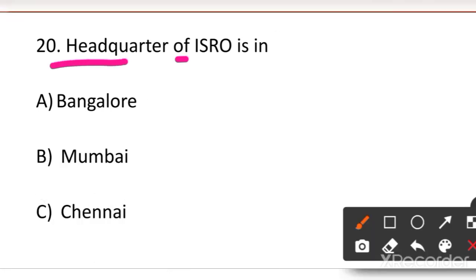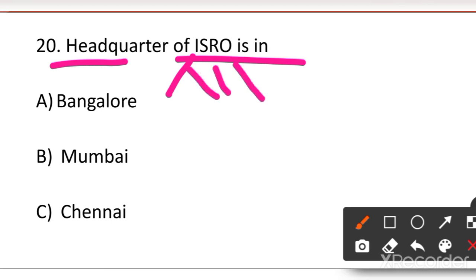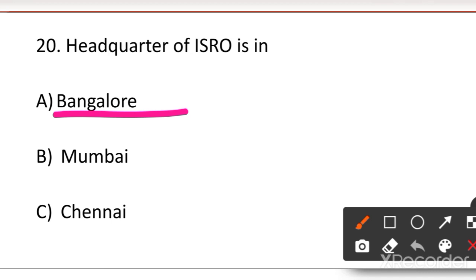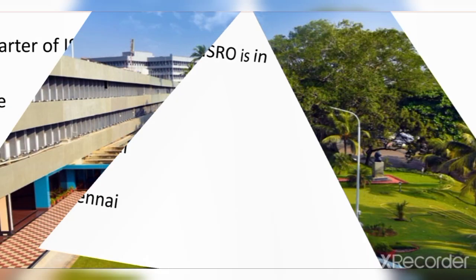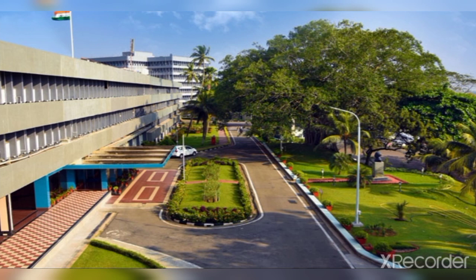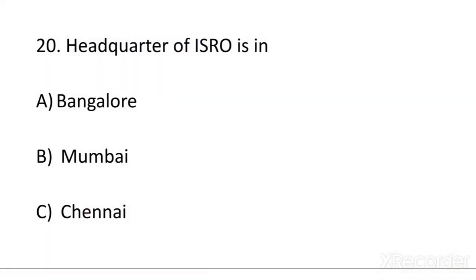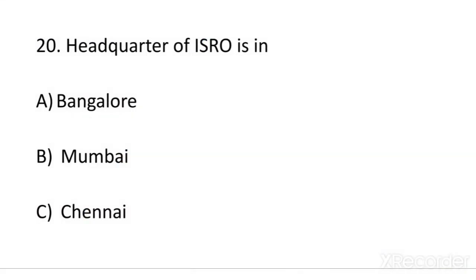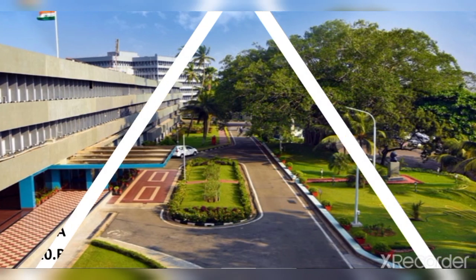Next question: where is the headquarters of ISRO? ISRO stands for Indian Space Research Organization — it is an Indian organization that researches space. Your options are: A. Bangalore, B. Mumbai, or C. Chennai. Here is a hint: one of these options is the capital of a southern Indian state. If you are interested in space and want to become an astronaut, ISRO is where research happens in India.